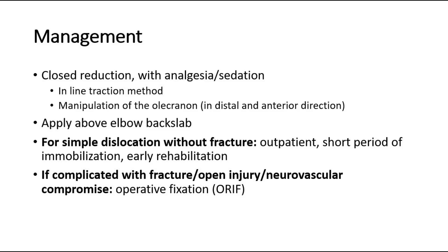If the dislocation is complicated by a fracture, open-type injury, or has neurovascular compromise, then operative fixation can be considered. This involves open reduction and internal fixation of the coronoid, radial head, and lateral ligament, with appropriate soft tissue repair, including lateral and medial collateral ligaments.